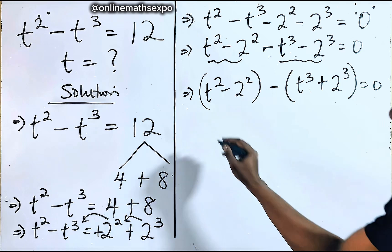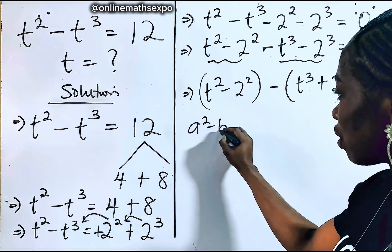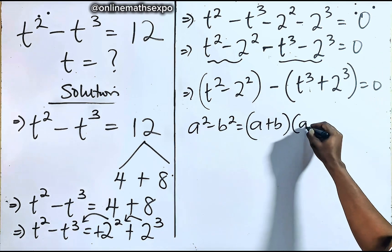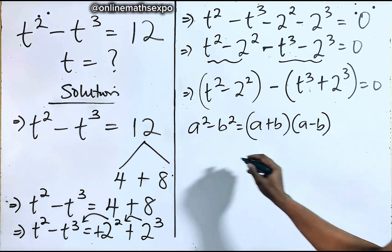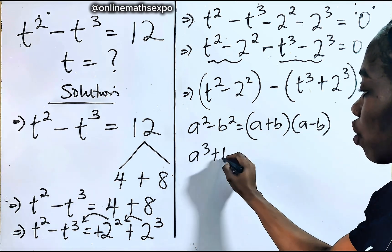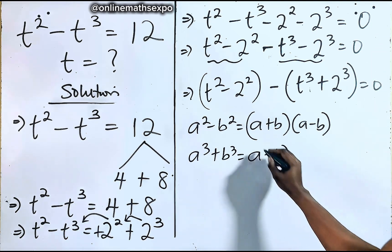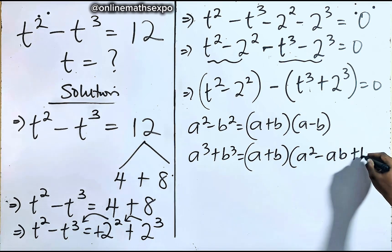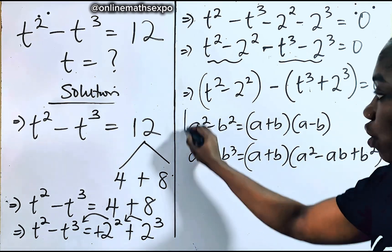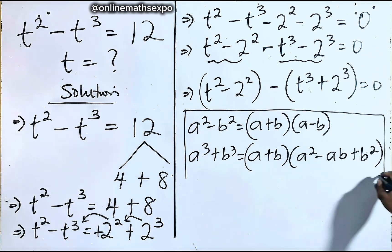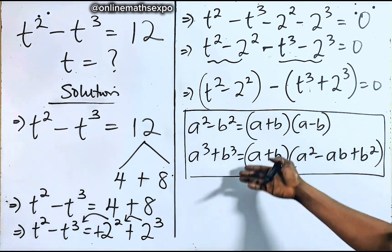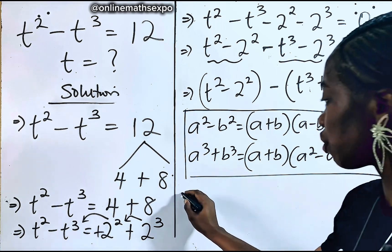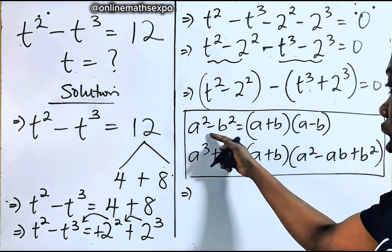Now remember: for every a squared minus b squared, it equals (a + b)(a − b). And for every a cubed plus b cubed, it equals (a + b)(a squared minus ab plus b squared). We will apply these algebraic identities to factor both groups.